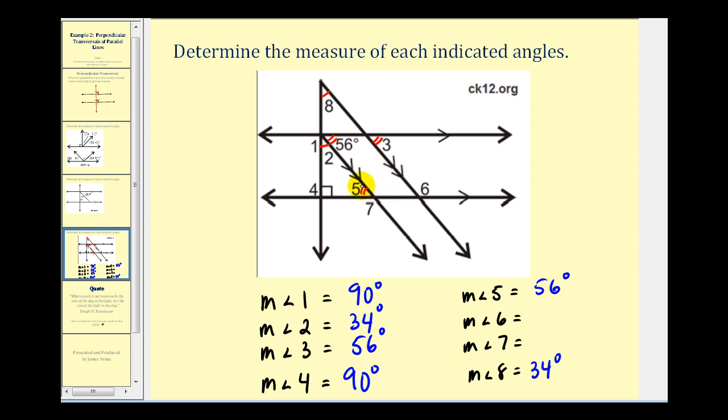Notice angle five and angle seven form a linear pair, which means they're supplementary. So if angle five is fifty-six degrees, one hundred eighty degrees minus fifty-six degrees would give us the measure of angle seven. So that'll be one hundred twenty-four degrees for angle seven.